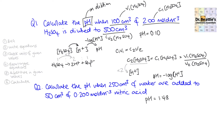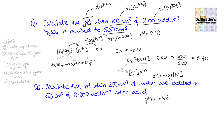Substituting in the given values — C1, V1, and V2 — we get a C2 of 0.4 mol/dm³ for sulfuric acid on dilution, which is less than the initial 2, so that makes logical sense. The hydrogen ion concentration is twice that amount, giving 0.80. Putting this into the pH equation gives 0.0969, which rounds to 0.10 to two decimal places.